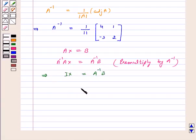Which is equal to A inverse, that is 1 over 11, 4, minus 3, 1, 2 into B, which is minus 2, 3. This is equal to